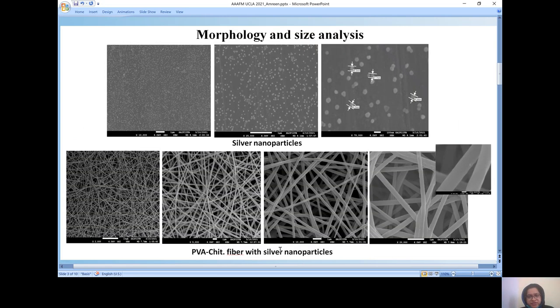For the characterization, we opted first for scanning electron microscopy to confirm the silver nanoparticle and PVA chitosan fibers formation, wherein the spherical structure of the AgNP confirmed morphology. Further, the size also was estimated to be around 60 nanometers, wherein in case of the fibers incorporated with the nanoparticles showed the morphology and width to be of 200 to 300 nanometers. The inset shows that there are the nanoparticles present.